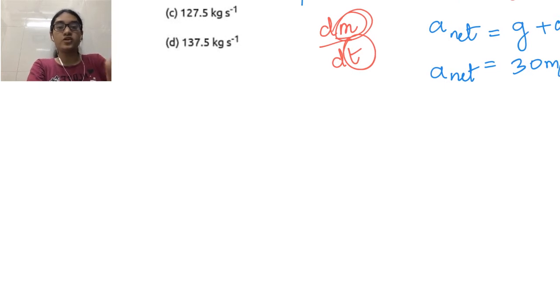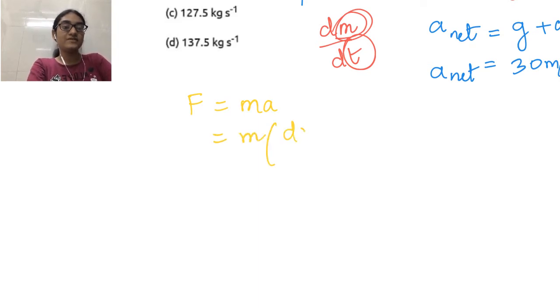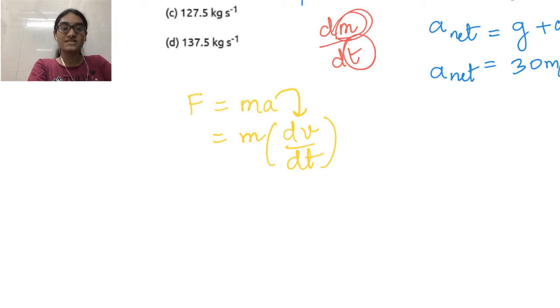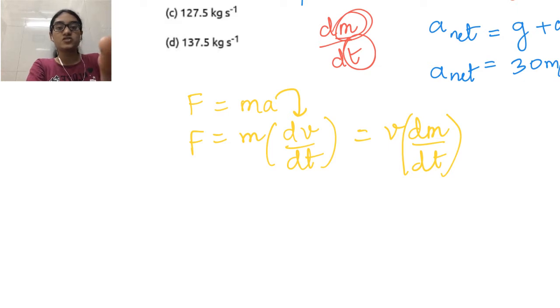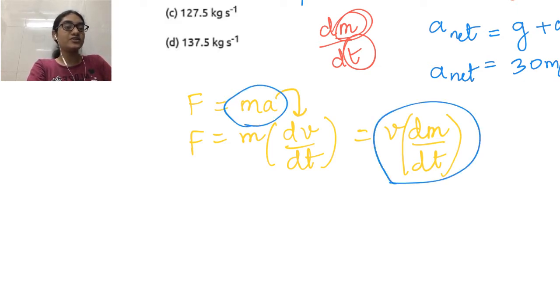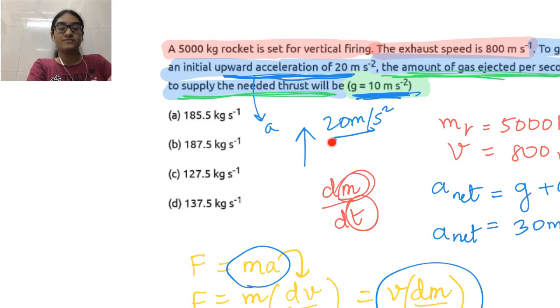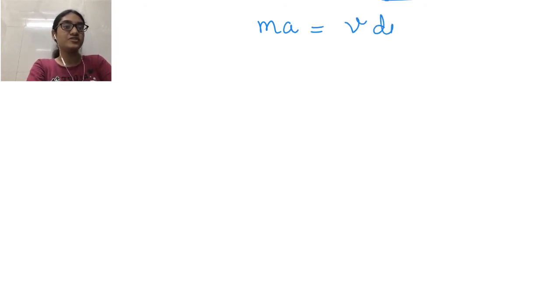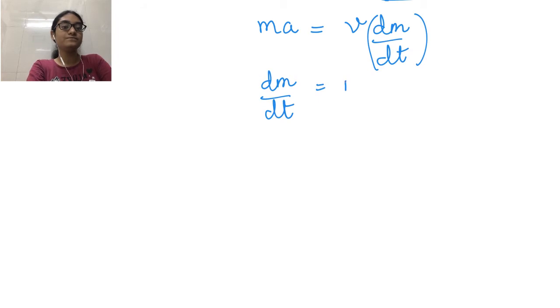We know force equals MA, which can be written as M into dV/dt. We can also write it as V into dM/dt, since the derivative of velocity with respect to time gives acceleration. So MA can be written as V into dM/dt. The question asks for dM/dt, so we equate: MA equals V into dM/dt. Therefore dM/dt equals MA upon V.